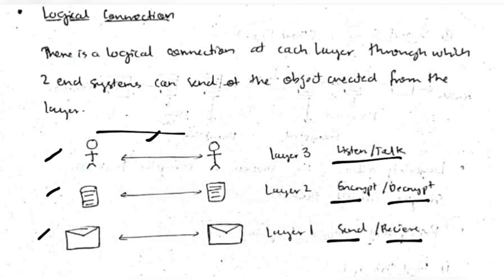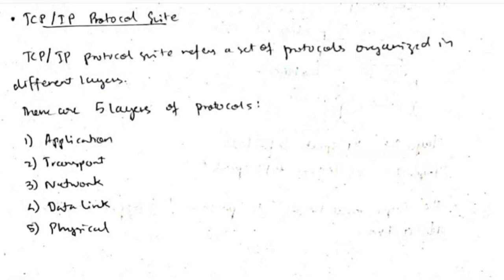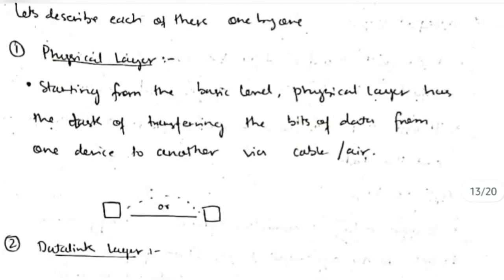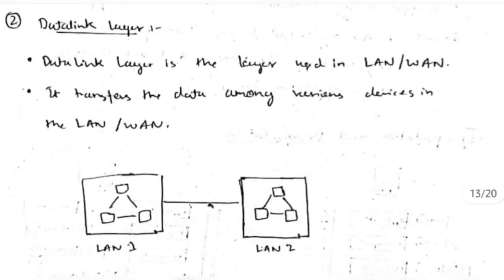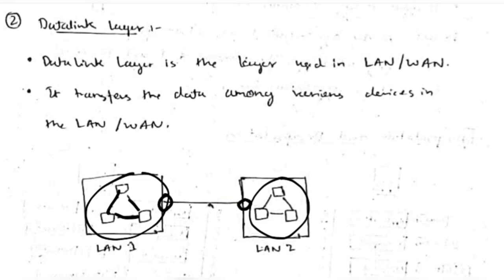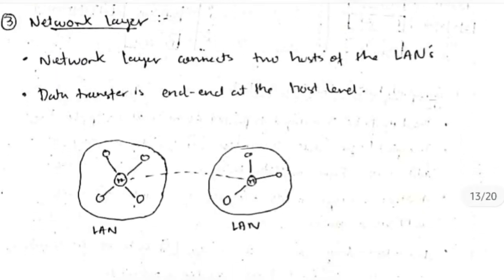The TCP/IP protocol suite is a set of protocols — rules to be followed at different layers. There are five layers. The physical layer handles direct communication wirelessly or by wire: the sender and receiver exchange data through a transmission medium. The data link layer connects two lines or bands, transferring data between devices and between two networks.